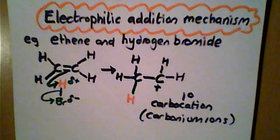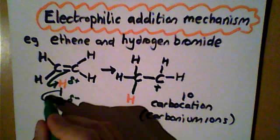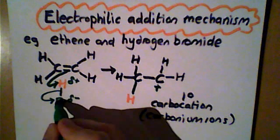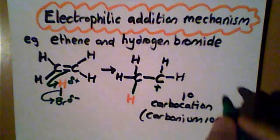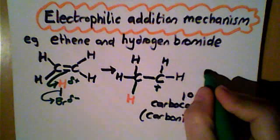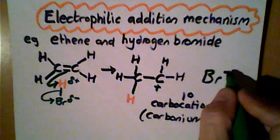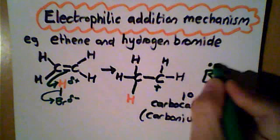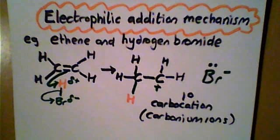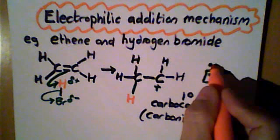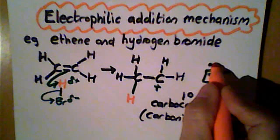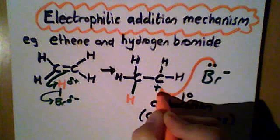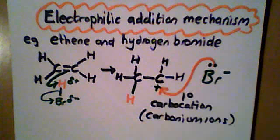Now the bromine here has taken one more electron than it had before, so it acquires a negative charge and an unbonded pair of electrons. Therefore very quickly the lone pair of electrons will undergo a nucleophilic attack on the carbocation.